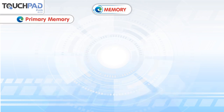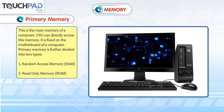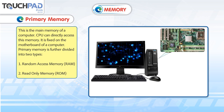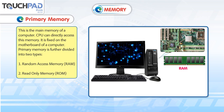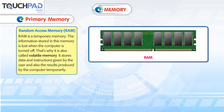Primary memory is the main memory of a computer. The CPU can directly access this memory. It is fixed on the motherboard of a computer. Primary memory is further divided into two types: Random Access Memory and Read Only Memory.